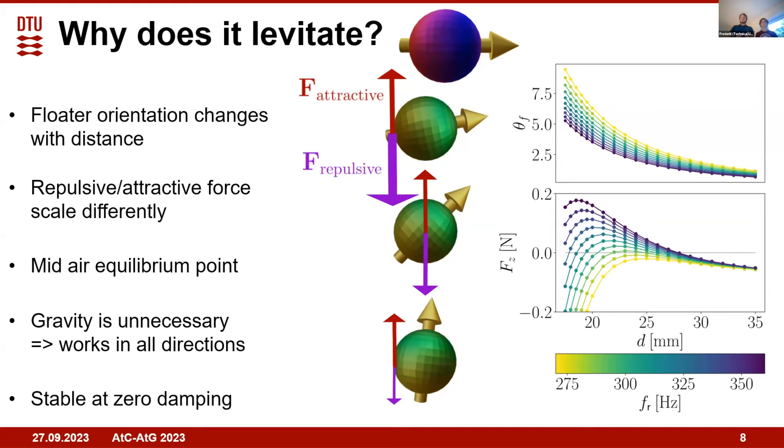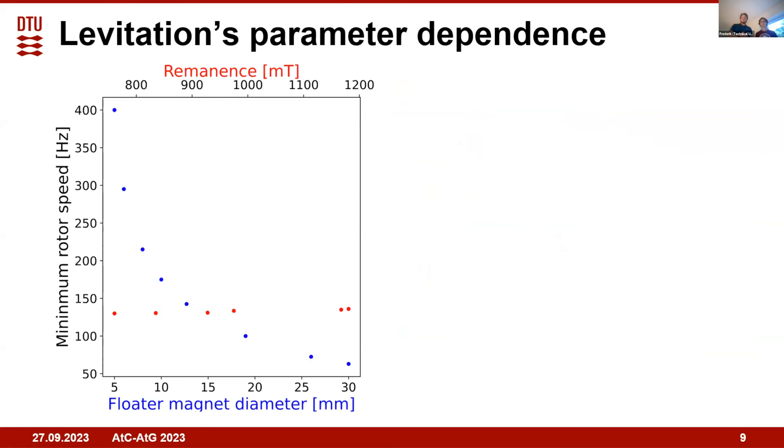Up to now we've only looked at neodymium iron boron magnets of one particular size and magnetization. So we've conducted experiments where we vary the magnetization while keeping the size constant, and we've also done vice versa, changing the size of the magnet and keeping the magnetization constant.